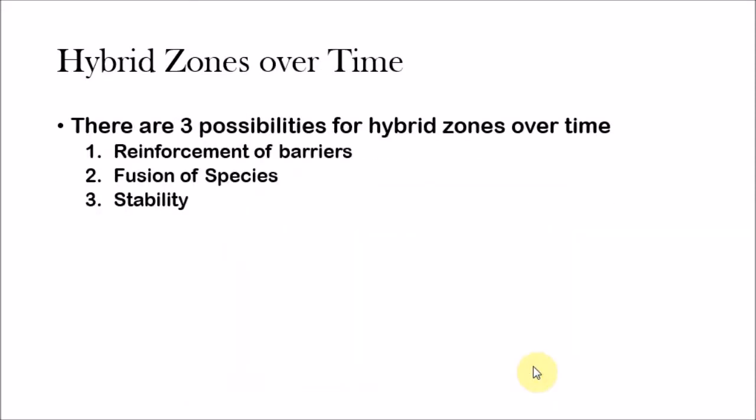Now when we talk about hybrid zones, there are three things that can happen whenever a hybrid zone is formed: reinforcement of barriers, fusion of species, and stability.